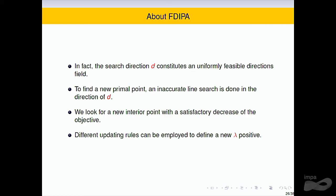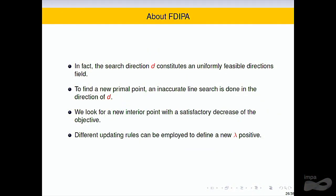The search direction is a uniformly feasible directions field to find a new primal point. An inaccurate line search is done in the direction of D, and we look for a new point that is feasible and has a lower function value. We can employ different updating rules to define a new lambda positive.